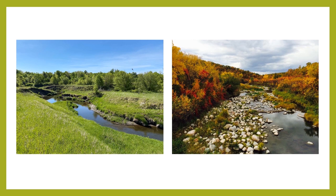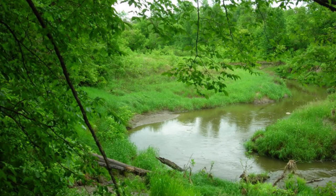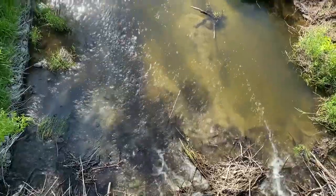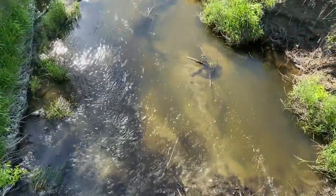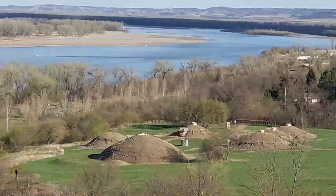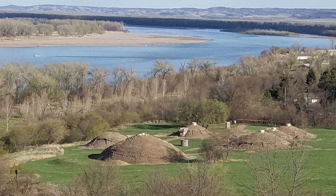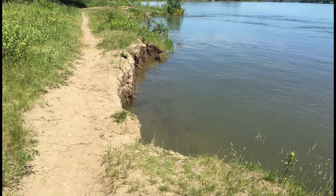These areas contain many different species of trees, forbs, shrubs, and grasses that provide food and cover for wildlife. Sandbars on the Missouri River also provide crucial habitat for many species of shorebirds, including the piping plover and the least tern.